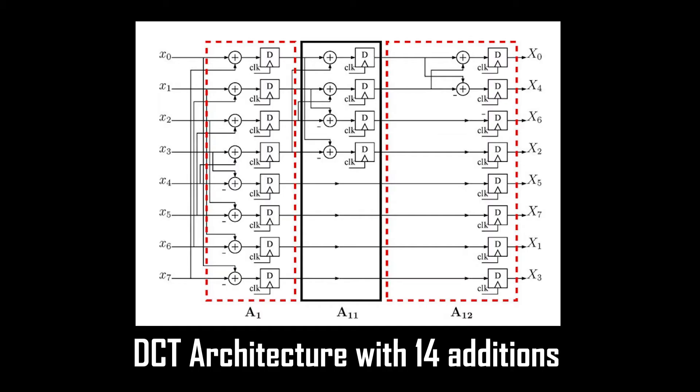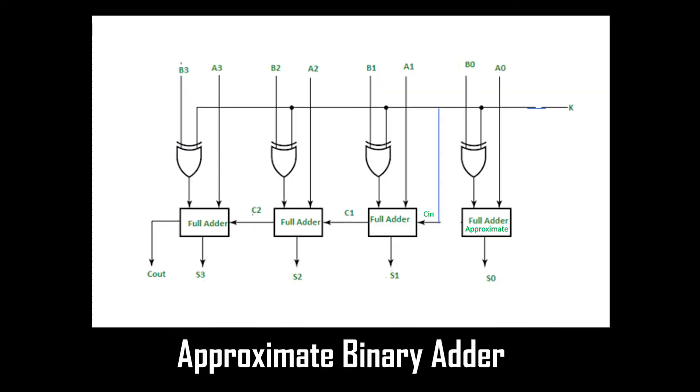This picture shows the architecture of DCT with 14 additions. It consists of 14 approximate binary adders to achieve the matrix multiplication for DCT application.